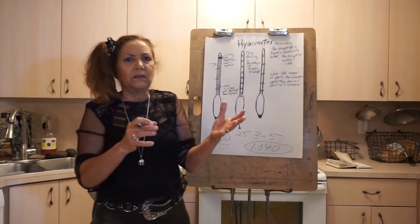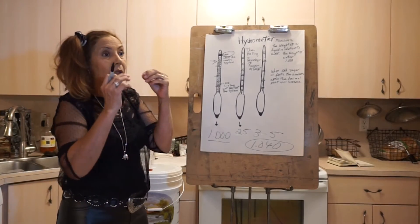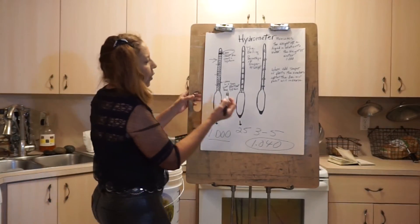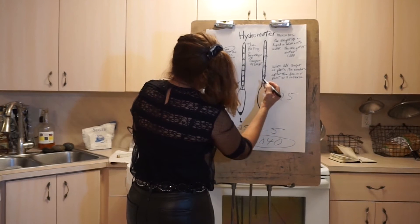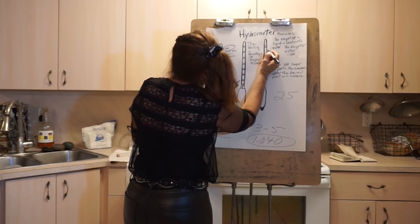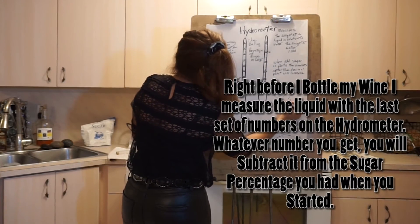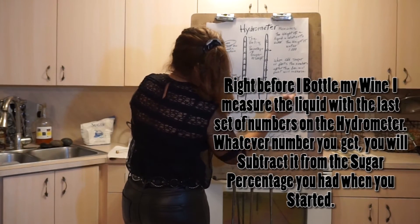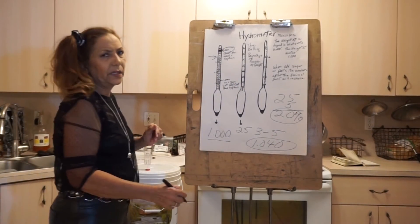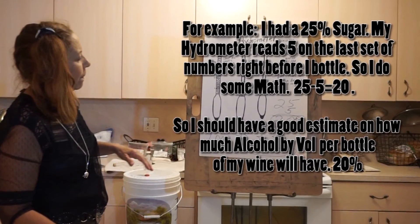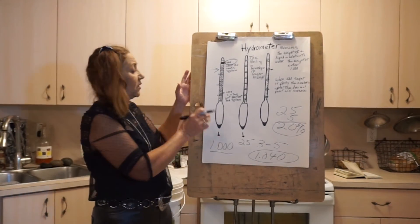After about two months or maybe two and a half months, you're going to check your wine - it's clear, it smells good, it tastes good, you want to bottle it. So if I started with 25% and the hydrometer is telling me it's right here, I'm going to take away this number from the first number. So your wine should be 20% alcohol by volume.